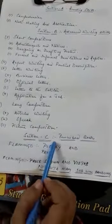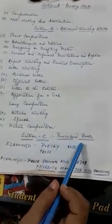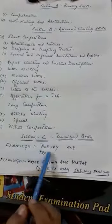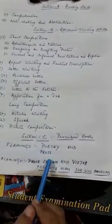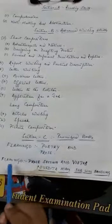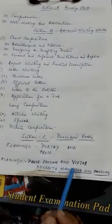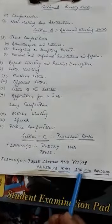Section C is from your prescribed books — that is Flamingo, poetry and prose section, Flamingo prose section, and Vistas. Nivedita Ma'am will be handling Vistas.